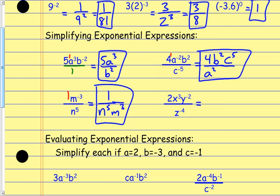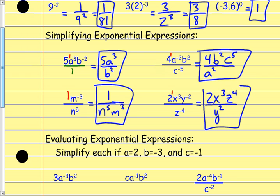For this example, the things with positive exponents — like the 2 to the first power — stay where they are. So the 2 stays, the x to the third stays. The y to the negative second jumps to the denominator and becomes a positive second. And the z to the negative fourth in the denominator goes up to the numerator and becomes z to the positive fourth. So again, negative exponents cause it to flip to the other side of the fraction bar.